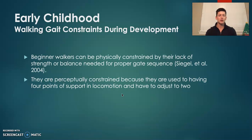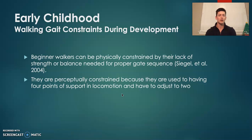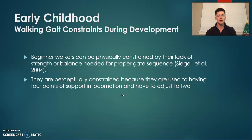Common constraints during early childhood development of the walking gait. They can be physically constrained with a lack of strength and balance needed for their proper gait sequence. Perceptually, this can be constraining because they're used to having four points of support in locomotion, and then they have to adjust to being on just two with their hind legs. This is also going to adjust things like their depth perception, which can also be perceptually constraining.